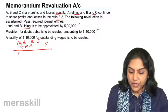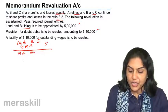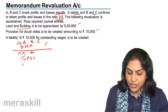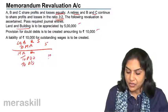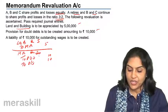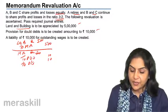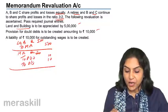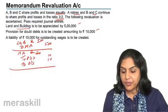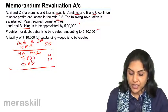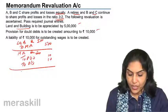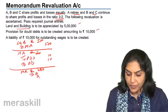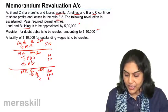Then we have provision for doubtful debts and outstanding wages. So, memorandum revaluation account is debited, and provision for doubtful debts and outstanding wages are credited — 10,000 and 10,000 respectively. Therefore, memorandum revaluation is debited by 20,000, whereas land and building appreciation is 5 lakh. As a result, we get a profit of 4 lakh 80,000, which is given to the old partners in the old profit sharing ratio — that is equal. So memorandum revaluation account is debited 4 lakh 80,000, credited to A, B, and C — 1,60,000 each.